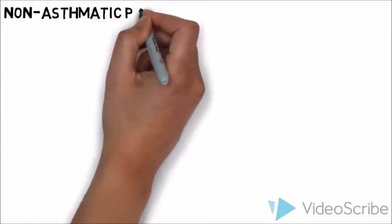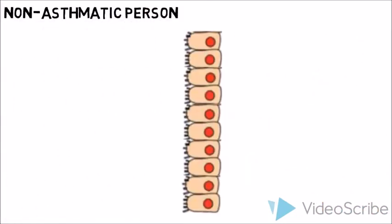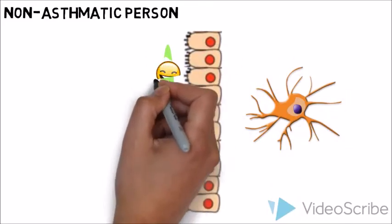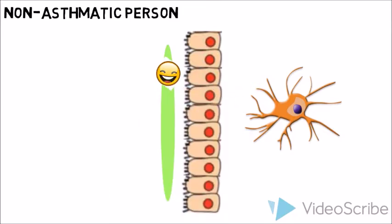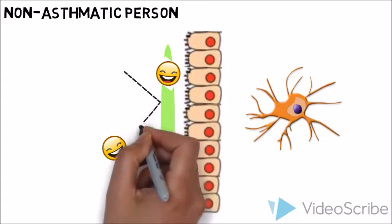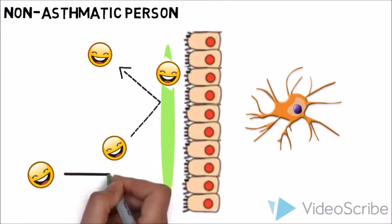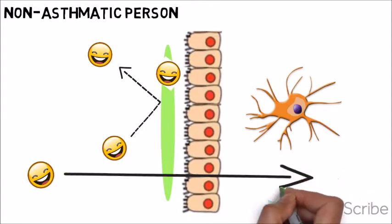In non-asthmatic individuals, there are several lines of defense at the cells lining the airways. Allergens could become trapped in the mucus and later coughed up. At the same time, these cells create a strong barrier against allergens. Despite the efforts, some particles may bypass these defenses.